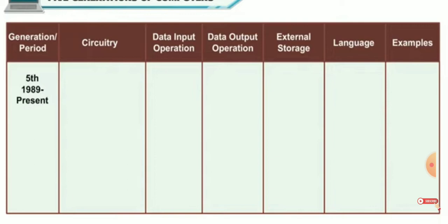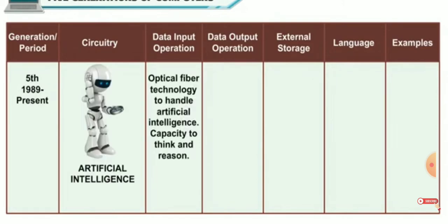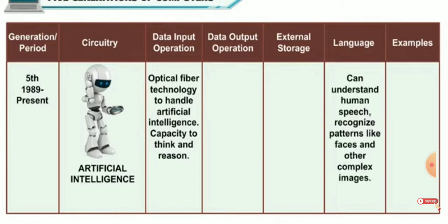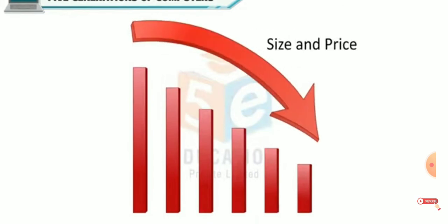The period after 1989 to the present is considered to be the advent of the fifth generation of computers having artificial intelligence. These computers use optical fiber technology to enable AI and are able to think and reason. They can understand human speech and recognize complex patterns like faces and images. Through this evolution, we note that the speed of computers increased while the size and the price reduced over the years.